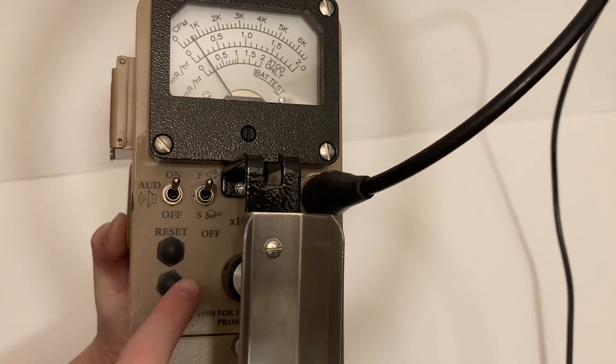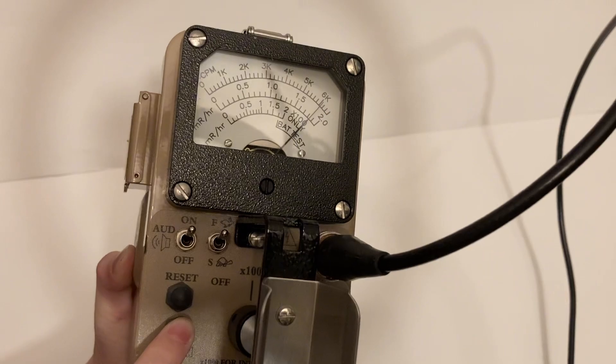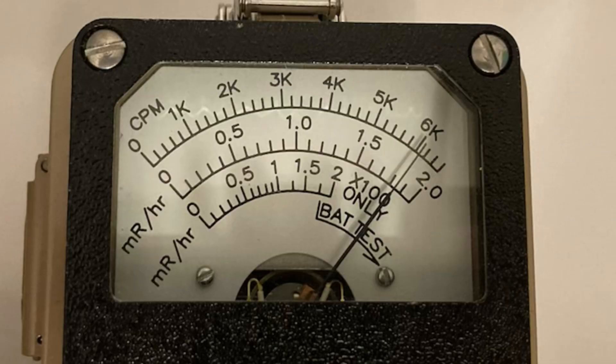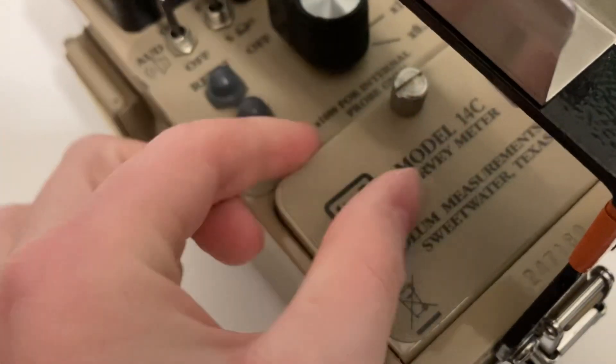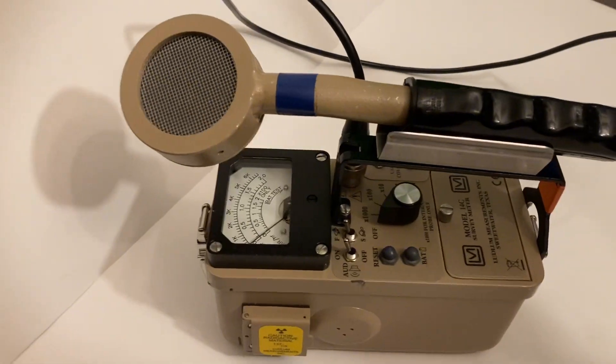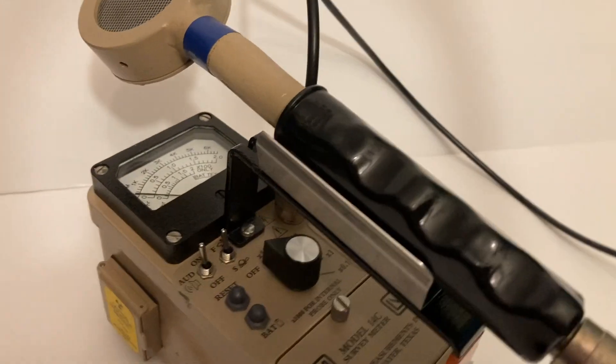Now hold down the bat button on the front panel of the instrument. Make sure that the needle passes the first vertical mark on the dial. If not, change the batteries immediately. If it passes the battery check, the instrument will be ready for use.